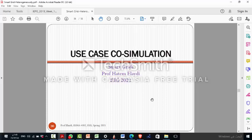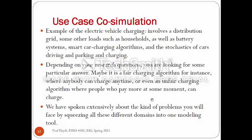السلام عليكم، نعود معكم نتكلم الحين على الكو-سيميوليشن ونعطي مثال فيه. المثال بنتكلم على الـ Electric Vehicle Charging، يتضمن distribution grid، وبعض الأحمال مثل المنازل، وكذلك نظام بطاريات، وخوارزمية شحن ذكية Smart Car Charging Algorithm، والاستوكاستيك تبع السيارات من قيادة وركن وشحن. وكل ذلك يعتمد على سؤال البحث الخاص بك.